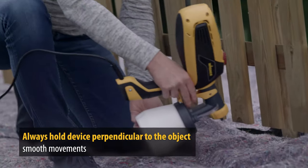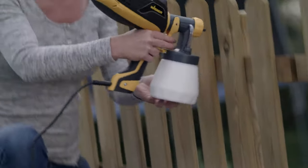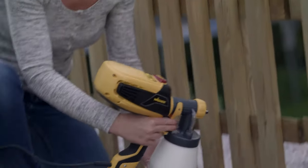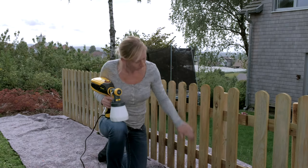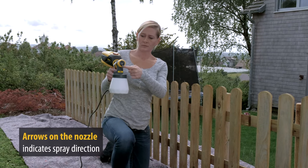In addition, you will notice that the closer you are to the object, the narrower the spray jet will become. This will avoid thicker layers of paint when changing direction.